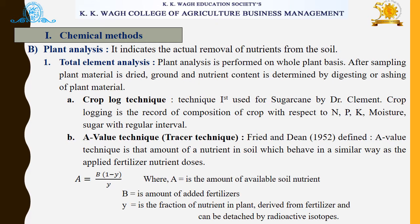Under chemical methods, the next topic is plant analysis. It indicates the actual removal of nutrients from the soil. Plant analysis is performed on a whole-plant basis. After sampling, the plant material is dried, then ground, and the nutrient content is determined by digesting or ashing of plant material. Using the crop log technique, first used for sugar cane by Dr. Clement, crop logging records the composition of the crop with respect to nitrogen, phosphorus, potassium, moisture, and sugar at regular intervals.